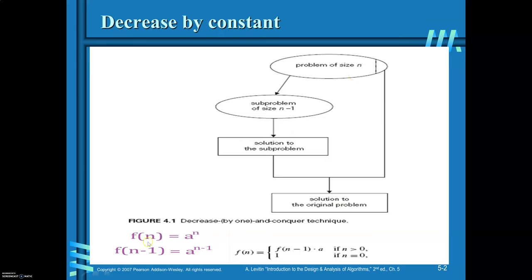For example, let f(n) equal to a^n. So then how do you find a^n? Assume that you already know the solution for a^(n-1). If you already know the solution for a^(n-1), then you can find a^n — it is equal to a^(n-1) into a. If n is greater than 0, and when n equals 1, a^0 is equal to 1. So here the problem size is decreased by 1. If you already know the solution for a^(n-1), then with that you can find the solution for a^n.